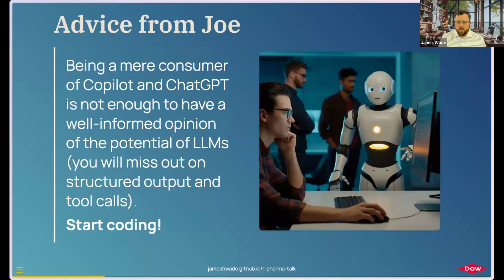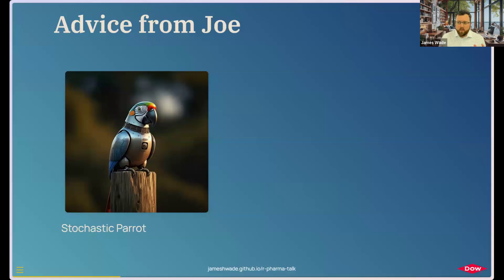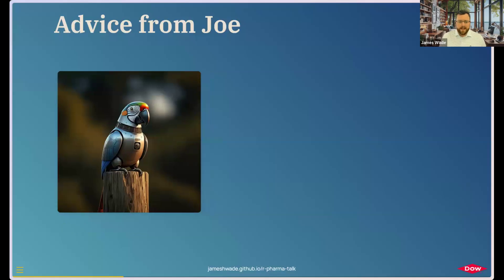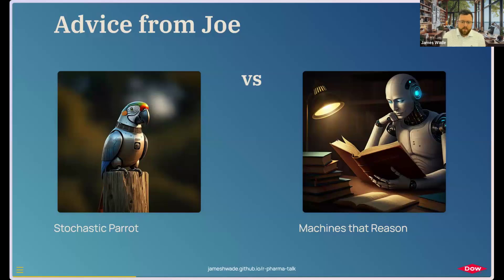So let's dive into this. Before I show you any code, I want to start with a reminder of some advice that Joe shared back at PositConf: if all of your intuition for how you're thinking about the use of these language models comes from using them as a chat interface, you're actually missing out. He called out some specific capabilities that I think are particularly useful, like structured output and tool calling. I want to help give you my own mental model here. You might have heard the stochastic parrot metaphor, where we're not thinking about these language models as actually being able to reason, which is probably factually correct, but is actually bad intuition for how you should use these. Instead, we can think about these as machines that reason, which may be factually incorrect, but does give us good intuition for how we can approach these agents.